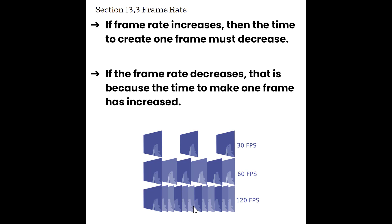In general, when frame rate increases — meaning more frames per second — the time to create one frame must decrease. If the frame rate decreases, that is because the time to make one frame has increased. This is similar to frequency and period: frequency is inversely related to the period, the time it takes to make a cycle. So frequency increases, there are more cycles per second and period must decrease. The same idea applies to frame rate and the time it takes to make one frame, which we call T-frame.